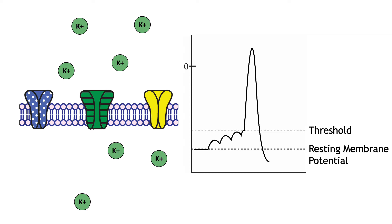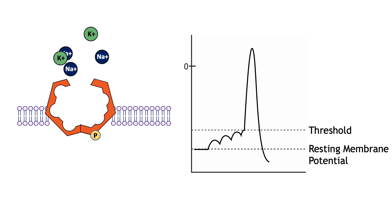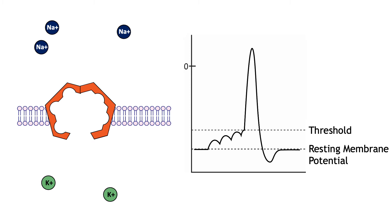Once the voltage-gated channels close, the sodium-potassium pumps will re-establish the proper ionic concentrations needed for the electrochemical gradients. This action, along with open leak channels, will return the cell to its resting membrane potential.